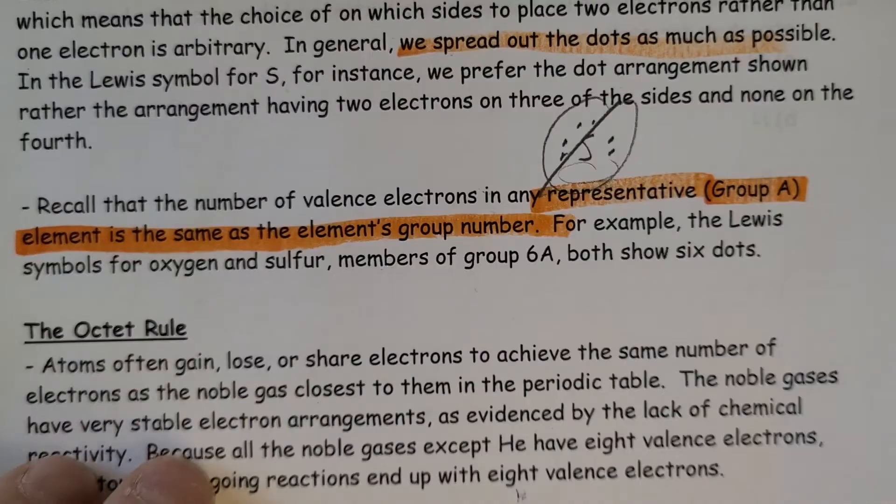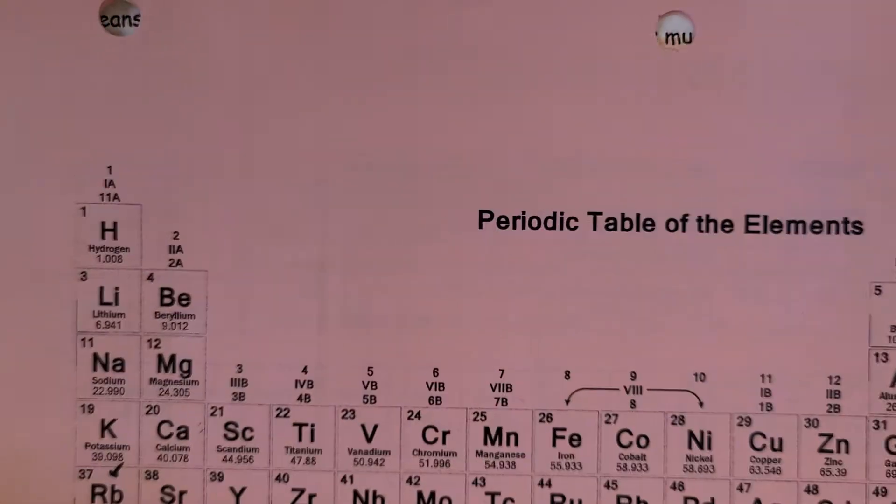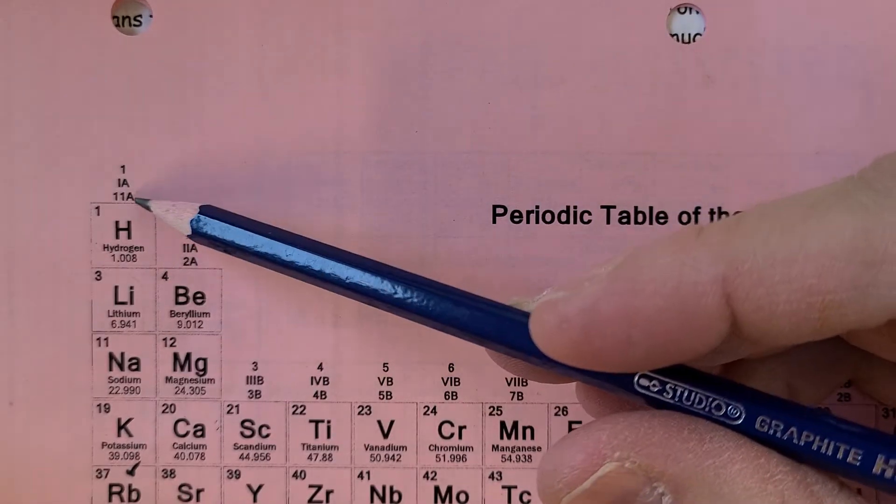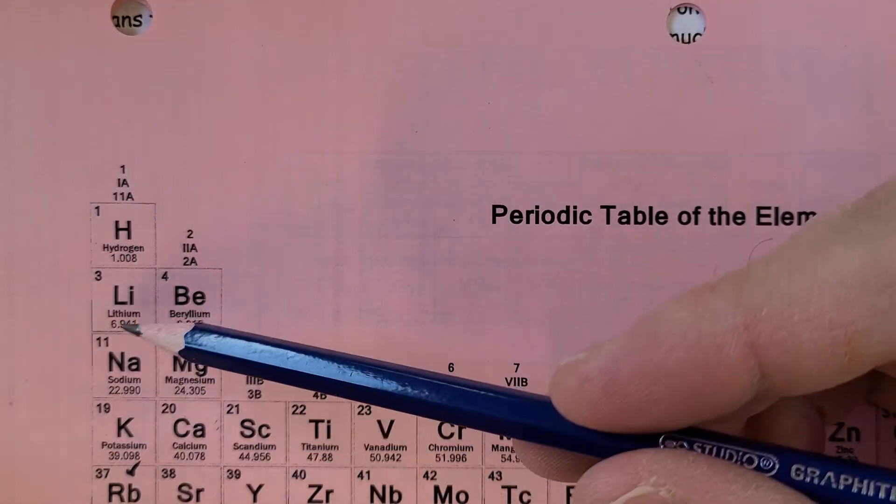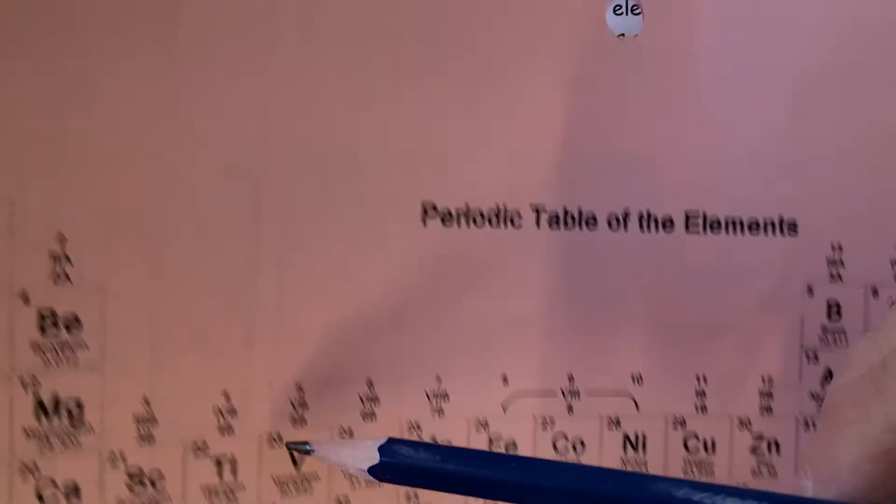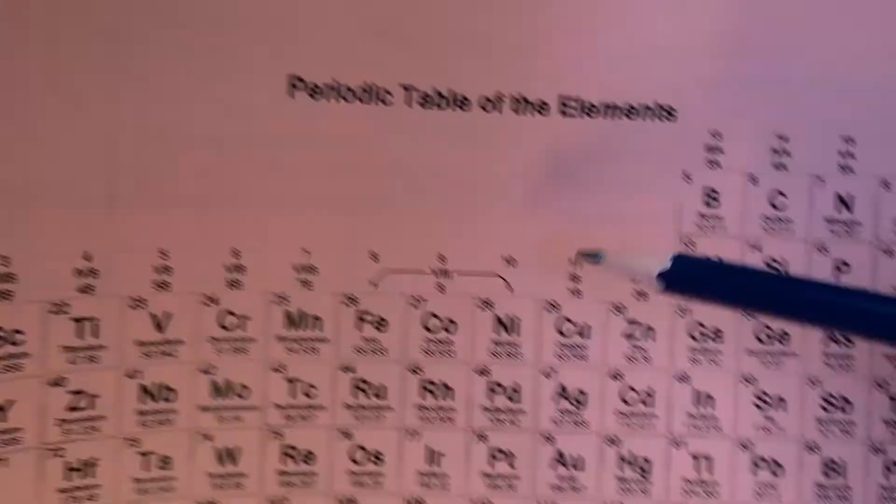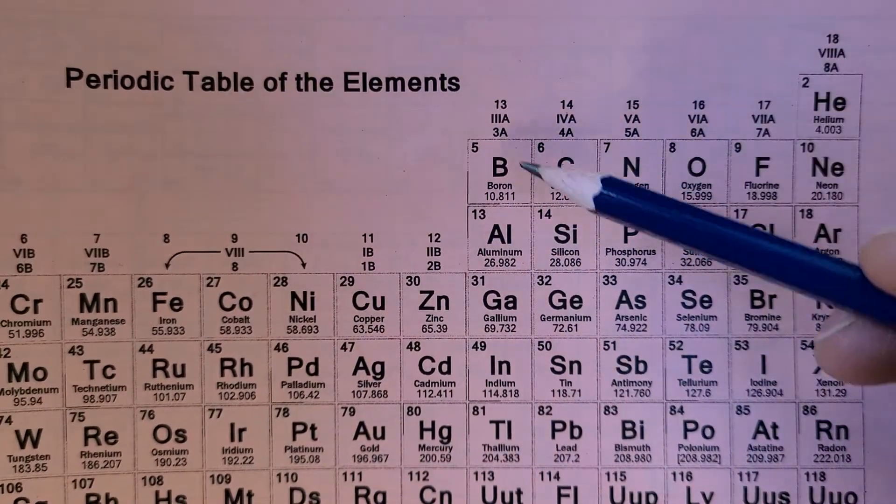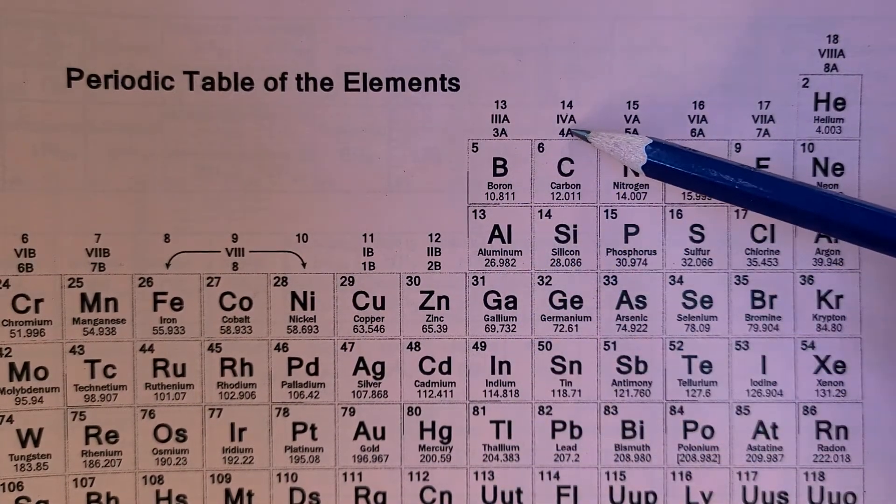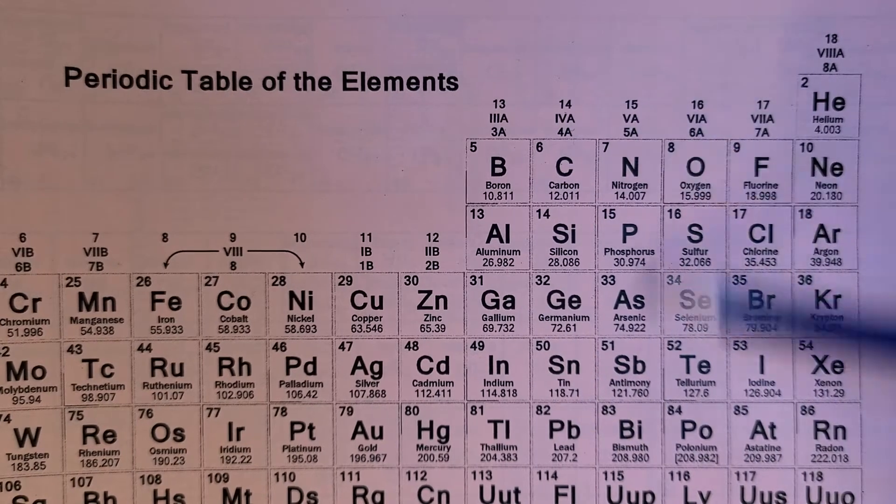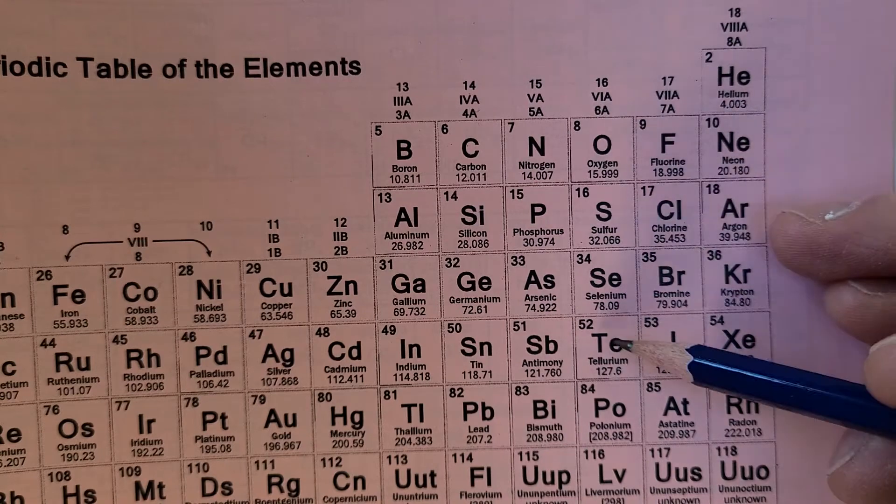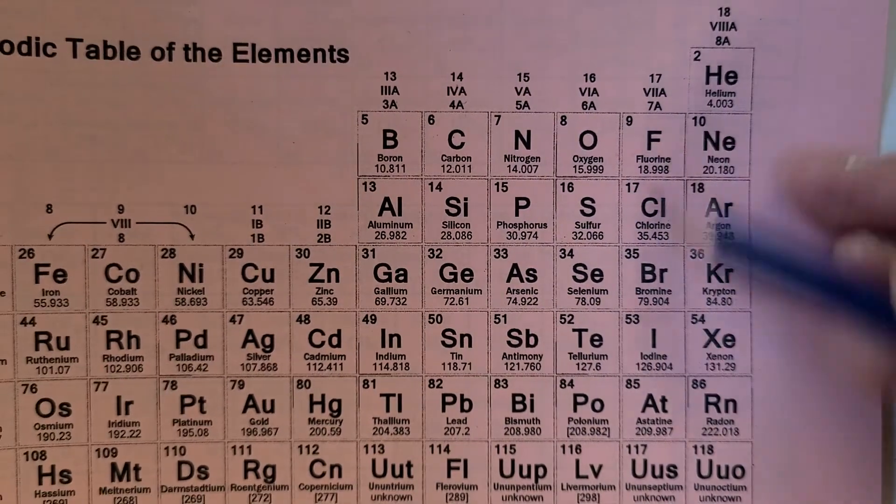If we look at the A groups, the 1A group would have one electron in their outer level, the 2A group two electrons. Transition elements, the Group B's, don't follow that same pattern, but if we continue here: 3A has three electrons in the outer level, 4A has four electrons, 5A has five, 6A like sulfur or oxygen have six valence electrons, and then seven would have seven.